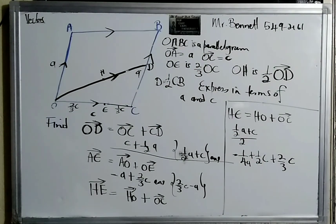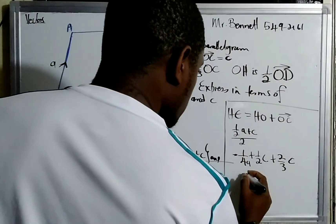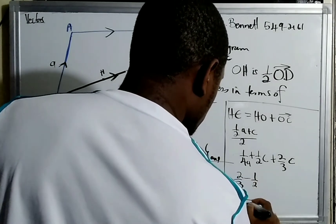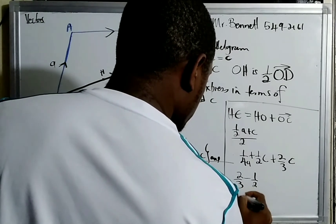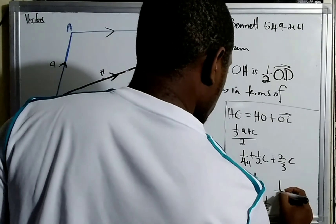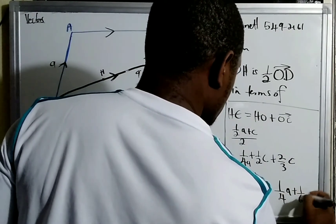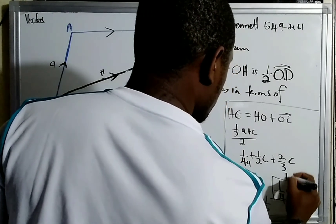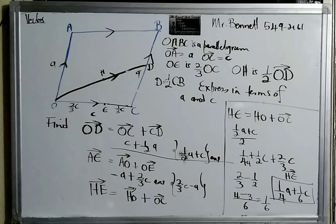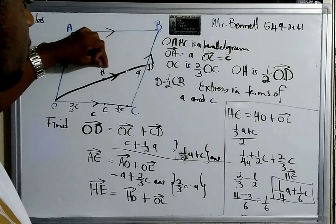Let's tidy up. We put the c terms together: two-thirds minus one-half. Using a common denominator of six, that gives us four-sixths minus three-sixths equals one-sixth c. So the vector HE equals one-quarter a plus one-sixth c. That is the vector from H to E.